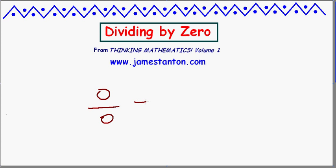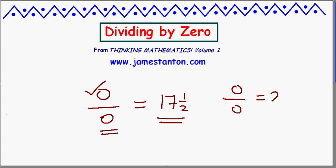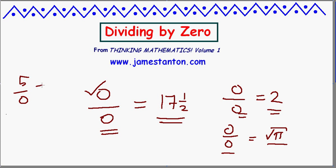But look at this case: what if I did 0 divided by 0? I claim the answer is 17 and a half, and I know I'm right — it passes my mathematical check. 17 and a half times 0? Yes, it's 0. I've just proven that 0 divided by 0 is 17 and a half. So in that case, it looks like division by 0 is fine. But actually, you're probably arguing with me — I could have just as well written 2. 2 times 0 passes the check; that is 0. Or I could say 0 divided by 0 is the square root of pi — it passes the check. The square root of pi times 0 is 0. So although 5 divided by 0 suffers from the problem of having no possible answer, 0 divided by 0 is also problematic, but for a different reason: it has too many answers.